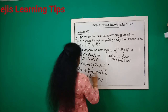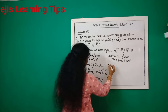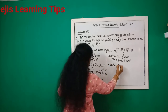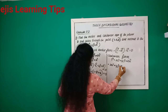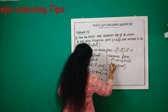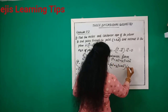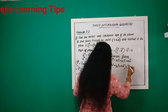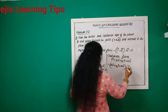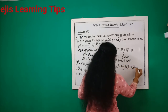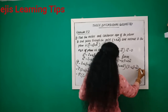For the Cartesian equation, we write r vector as xi plus yj plus zk. Then: (xi plus yj plus zk) dot (i minus 2j plus k) plus 1 equals zero.